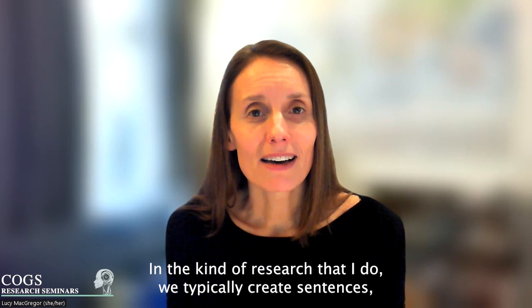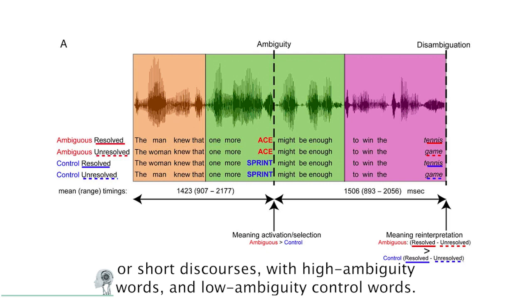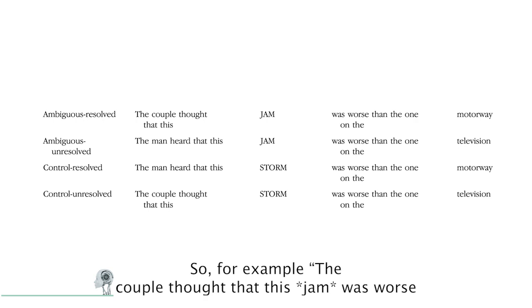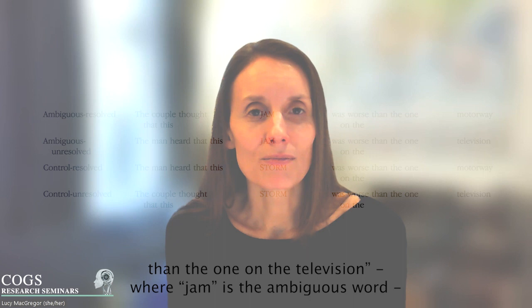we typically create sentences or short discourses with high ambiguity words and low ambiguity control words. For example, 'the couple thought that this jam was worse than the one on the television,' where jam is the ambiguous word, or 'the couple thought that this storm was worse than the one on the television.'